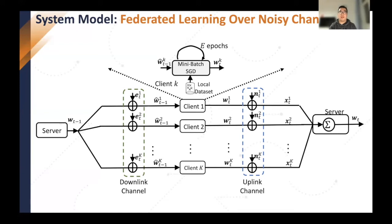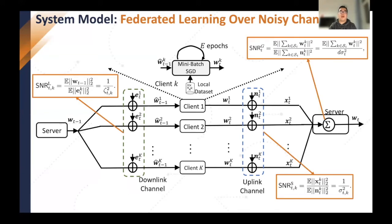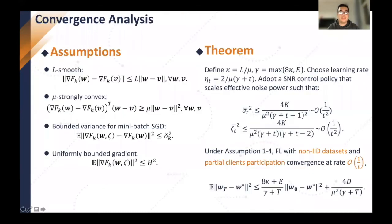To better evaluate federated learning in noisy channels, we define three kinds of SNR. The first is the local SNR, which represents the SNR of the global model received at each client. The second is the SNR at the server, which represents the SNR of the local model received at the server. The third is the SNR of the global model, which represents the SNR of the global model at the server after aggregation.